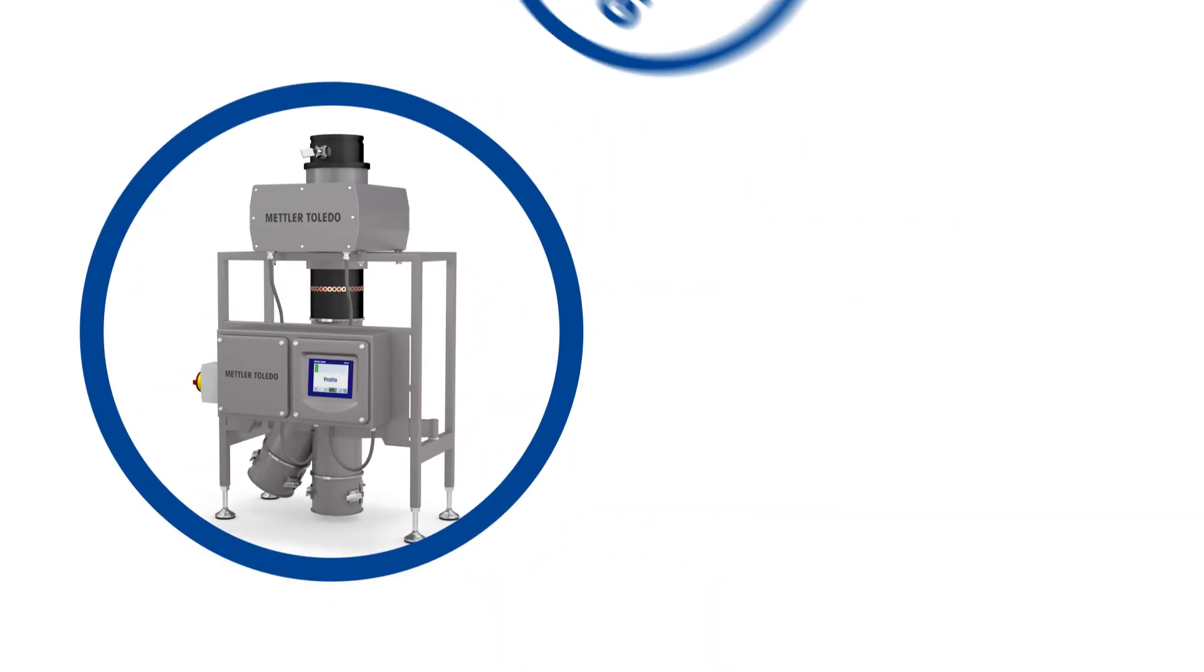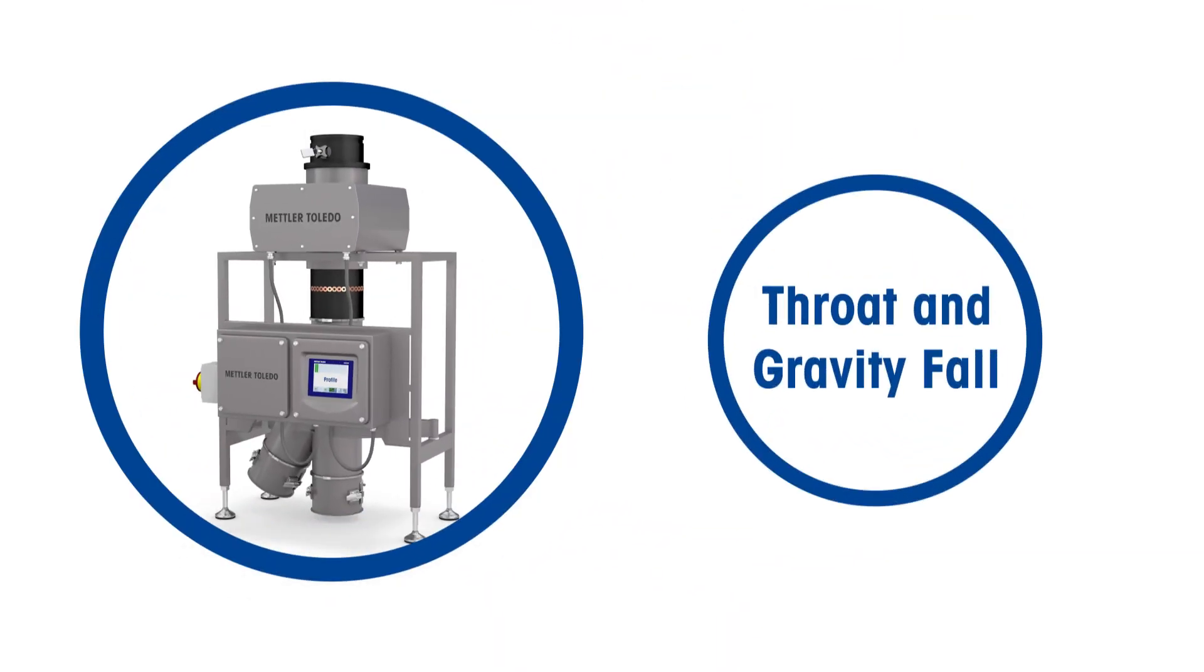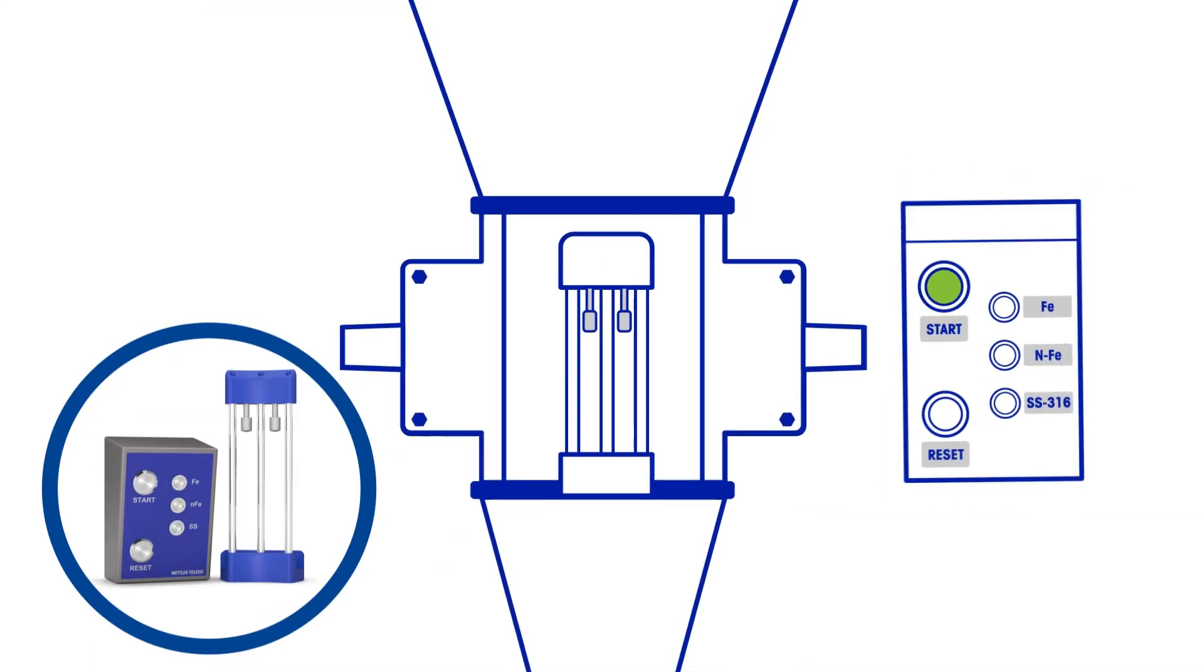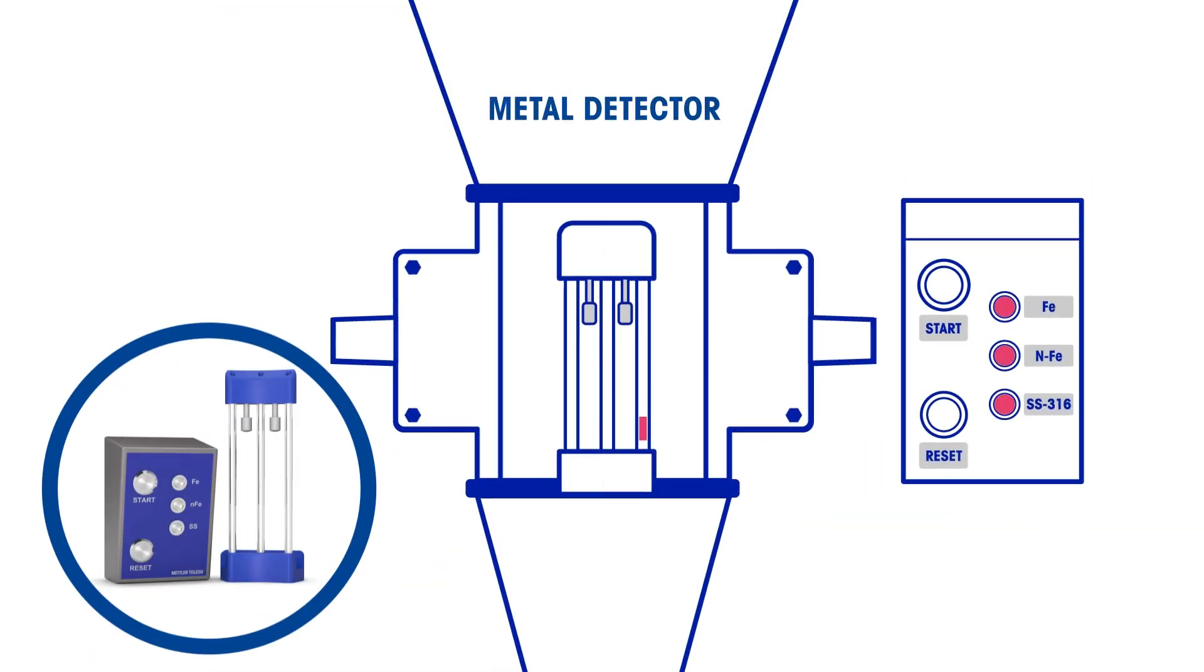Did you know that all the latest Mettler Toledo Throat and Gravity Fall systems are now available with an approved automatic test system known as ATS? ATS is a non-invasive method of testing which uses a device that sits inside the metal detector's aperture, and has been designed specifically to address some of the biggest pitfalls associated with manual testing vertical systems.